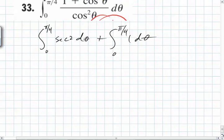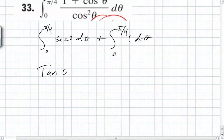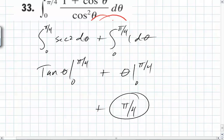The derivative of what is secant squared? Tangent. So this right here is just tangent theta from 0 to pi over 4 plus theta from 0 to pi over 4.